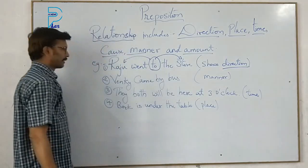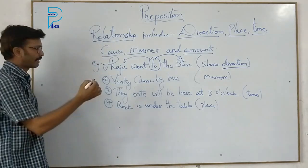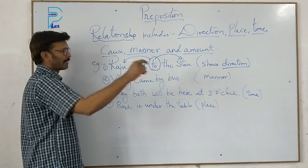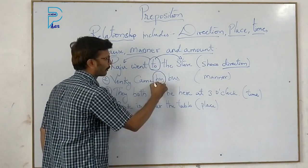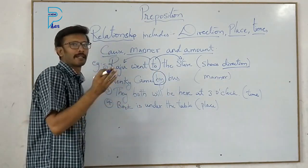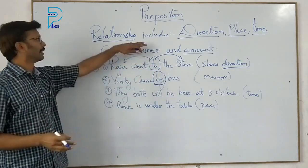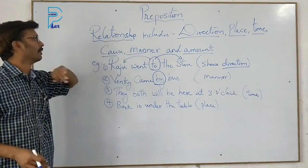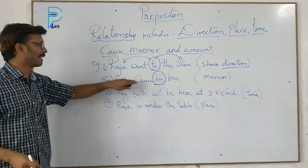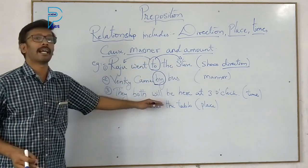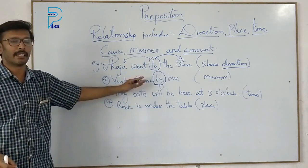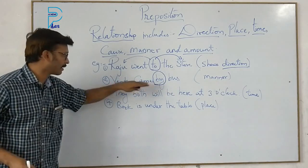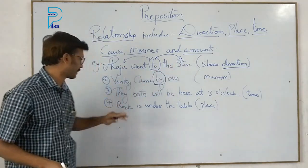In the second example, 'Wenki came by bus' — here the preposition 'by' indicates manner, telling us how Wenki came. So manner is one of the relationship elements expressed by prepositions.